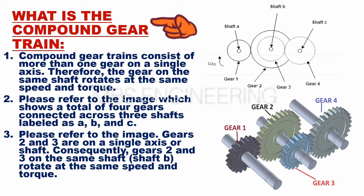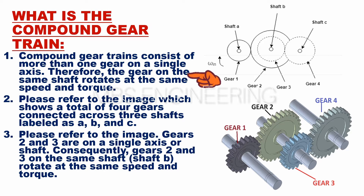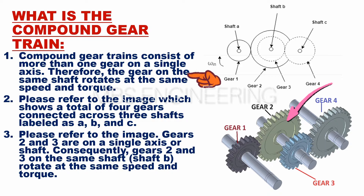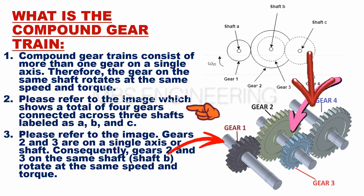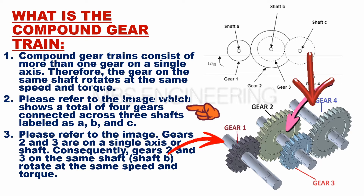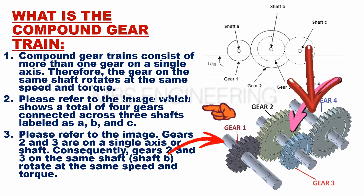We learn what is the compound gear train. The first point is that compound gear trains consist of more than one gear on a single axis. Therefore, the gears on the same shaft rotate at the same speed and torque. Please refer to the image, which shows a total of 4 gears connected across 3 shafts labeled as A, B, and C.